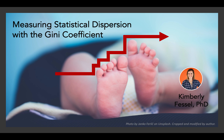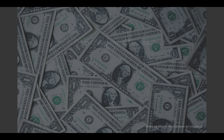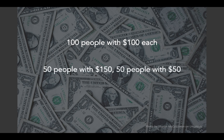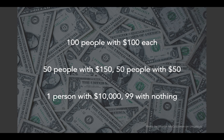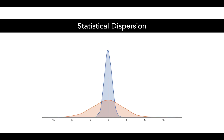Consider 100 people that have $100 each; 50 people that have $150 and 50 people that have $50; or one person with $10,000 and 99 people with nothing. Certainly each of these three scenarios is different, but if we were just taking the mean value, we would come up with the same $100 per person for all three situations. The big difference is how money is spread out among the people, or statistical dispersion.